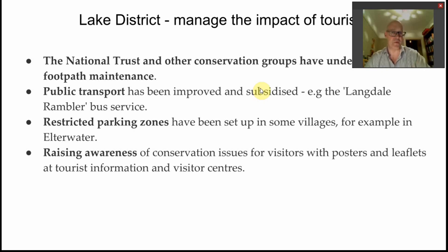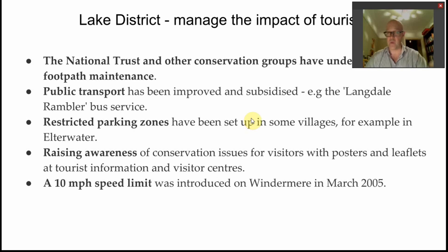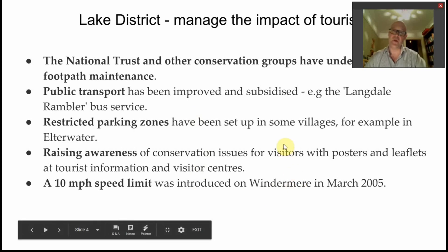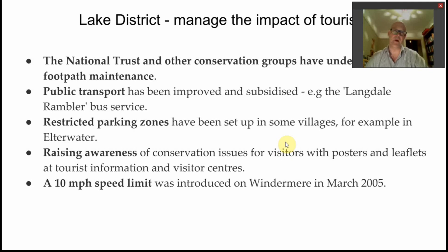At Elterwater, they've reduced parking availability and raised car parking prices to encourage public transport use. Conservation awareness is now well signposted for visitors, so people understand the wilderness they've come to experience is fragile. A notable example is the 10 mph speed limit imposed on Windermere, which reduced high-speed boating and jet skiing but prioritized tranquility — nudging those activities to other lakes.